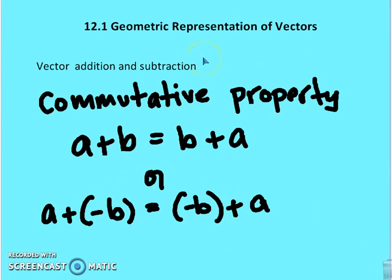So the commutative property applies to vector addition and subtraction. So I can say A plus B is the same as B plus A. It doesn't matter what order you add the vectors in. The resultant vector sum is always going to be the same. And this also holds for values in which we're taking a negative vector value.